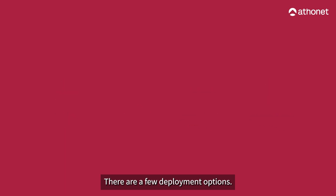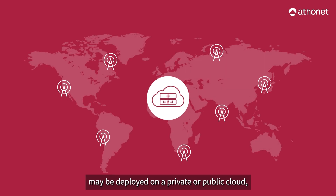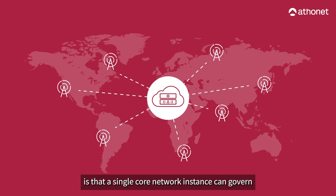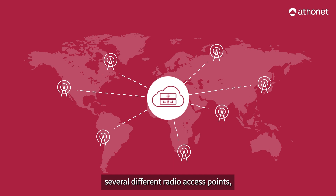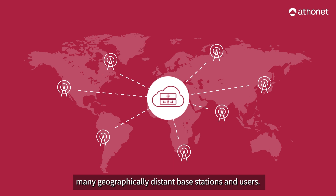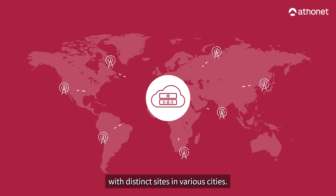There are a few deployment options. First, the entire 5G core network may be deployed on a private or public cloud in what is called a centralized deployment. An advantage to this type of deployment is that a single core network instance can govern several different radio access points and unify into the same private 5G network many geographically distant base stations and users. As an example, this is suitable for a company with distinct sites in various cities.